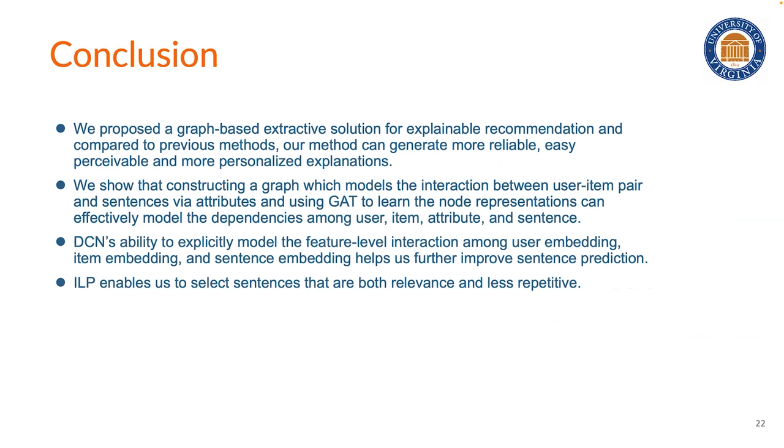The experiment shows that integrating heterogeneous information about user, item, attributes and sentences using the graph structure and modeling the feature level interaction among user, item and sentence embedding helps the model to generate these very good explanations. Also using the ILP post-processing enables us to select high relevant and less repetitive sentences and also gives us more control of the explainer.